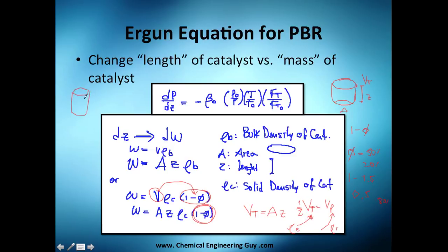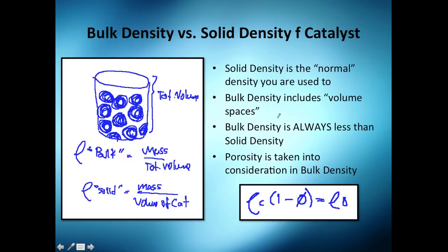So you cannot put more volume of pellets in a smaller volume of the reactor. So you know at least this volume is way lower, it's not as much as the total volume. So hopefully you get the idea: the bulk density is always less than the solid one.